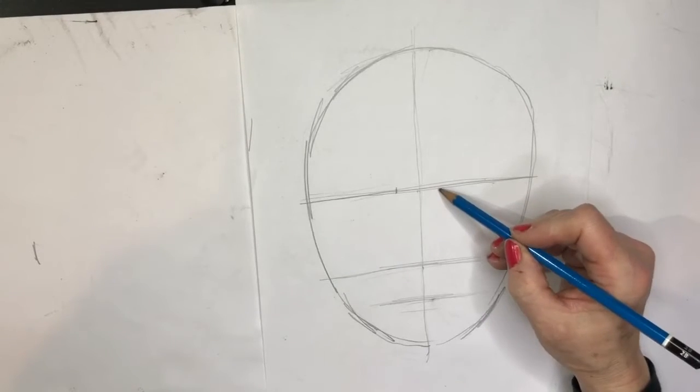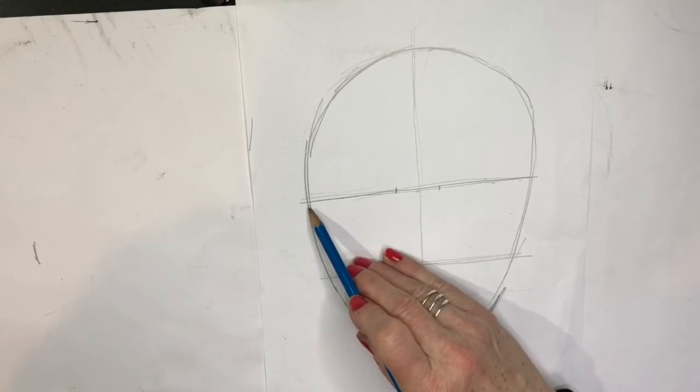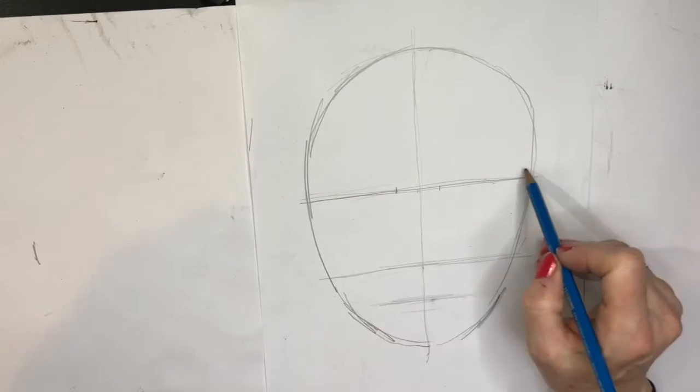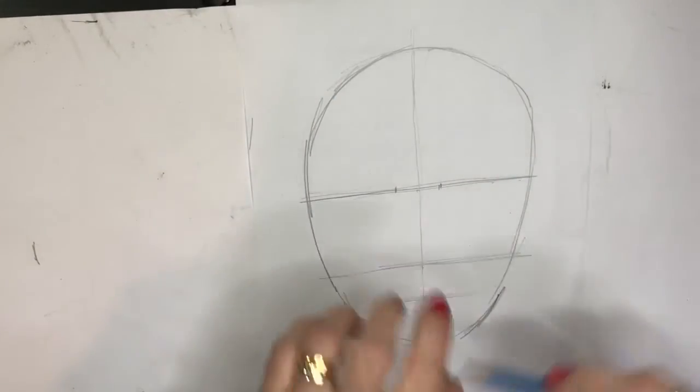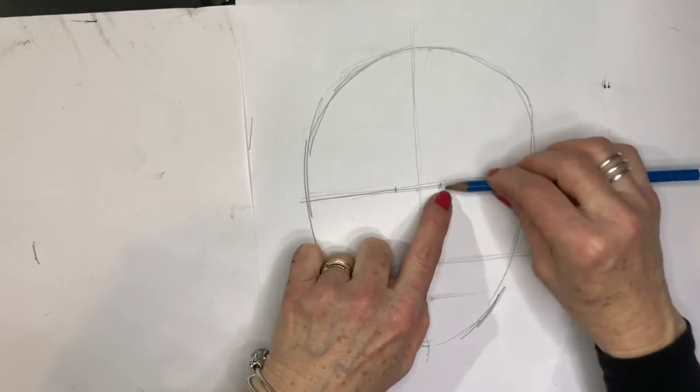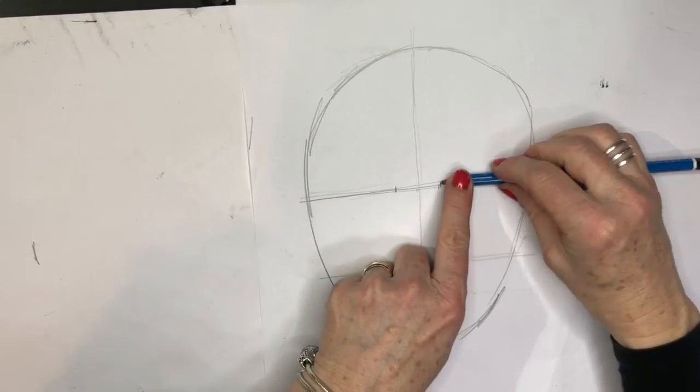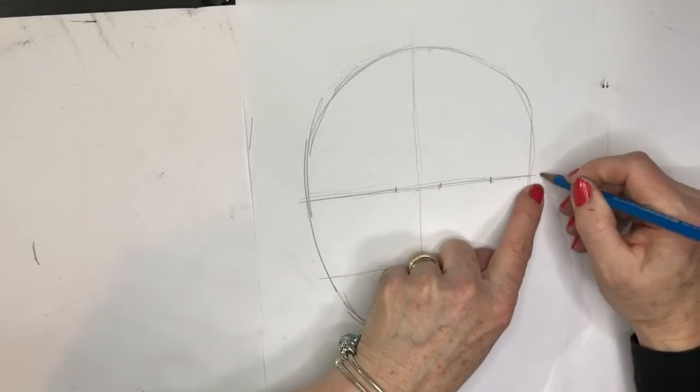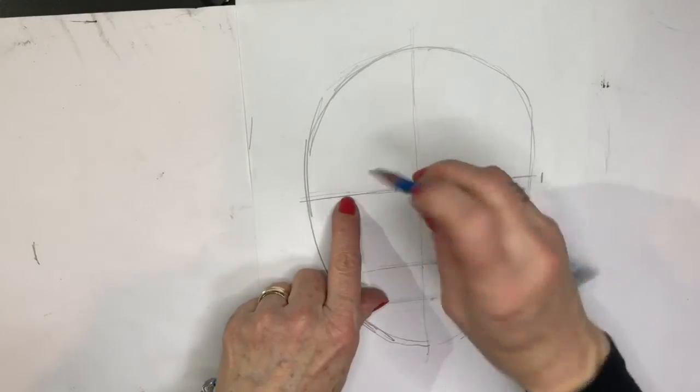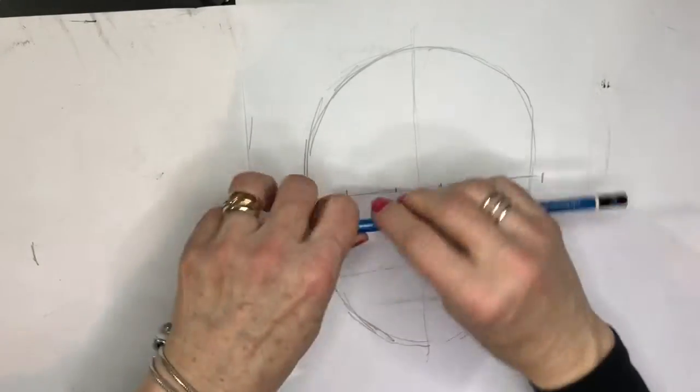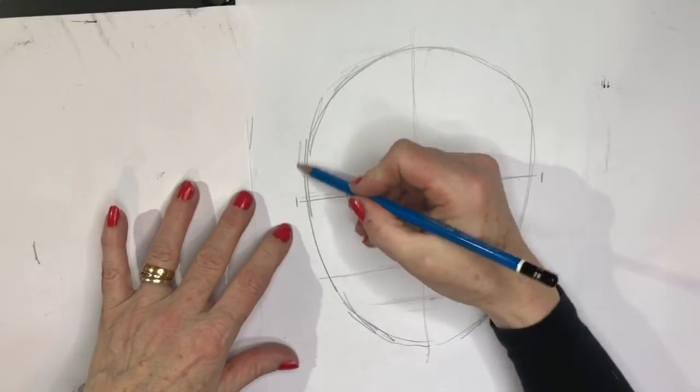The eyes are really useful for working out how wide the head is because your face is supposed to be five eyes wide. So you can say that is an eye width. I'm going to measure and get five eyes along there so I can see my head is going to have to be a little bit wider.